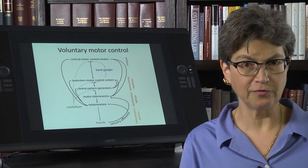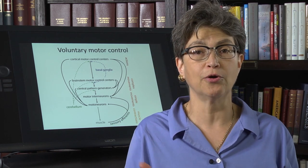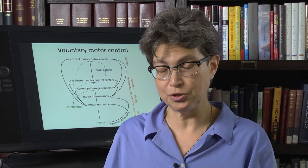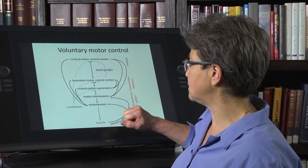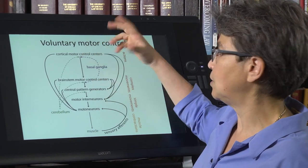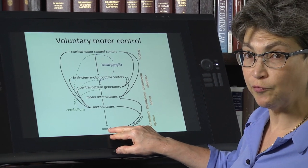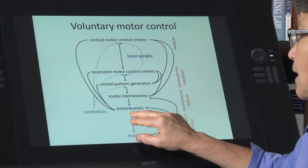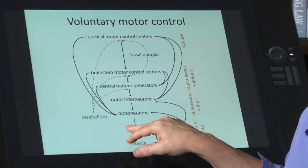The motor control system consists of the motor hierarchy plus two modulatory systems. I've diagrammed this in this cartoon, which shows in black the hierarchy. The ultimate goal is to move muscle, and the only way to move muscle is through motor neurons. But the motor neurons are dumb — they're just going to do what they're told.